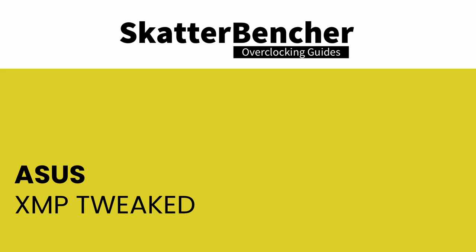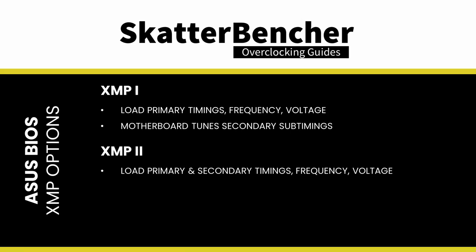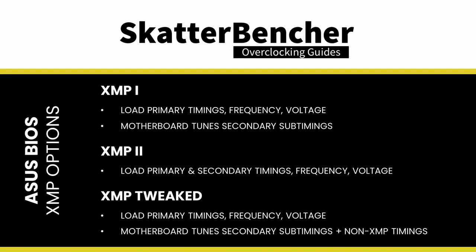XMP Tweaked is a new option available in the ASUS BIOS alongside XMP1 and XMP2. XMP1 loads only the primary timings, frequency, and voltage, with secondary timings adjusted by motherboard auto rules. XMP2 loads the complete XMP profile including primary and secondary timings, memory frequency, and voltage. XMP Tweaked is based on the XMP1 approach but makes more aggressive adjustments to various subtimings. In this OC strategy, I try XMP Tweaked instead of the XMP2 I usually use.